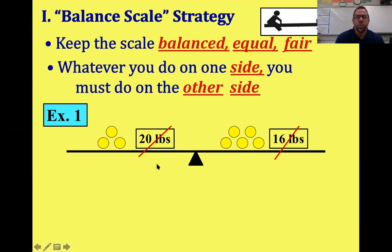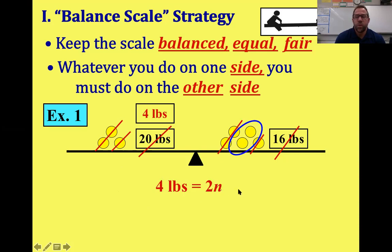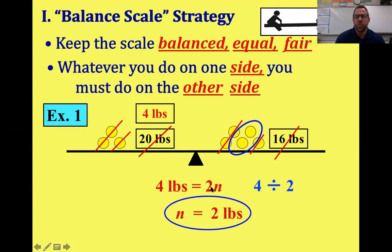After removing 16 pounds from both sides, the right side is cleared and we have 4 pounds remaining on the left. Now for the nuggets: we have 3 on the left and 5 on the right. We can only remove 3 from each side, leaving 2 nuggets on the right. So now we have 4 pounds equals 2 gold nuggets. Dividing 4 by 2 tells us each nugget weighs 2 pounds.